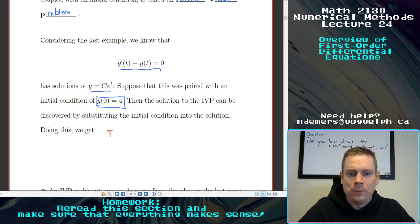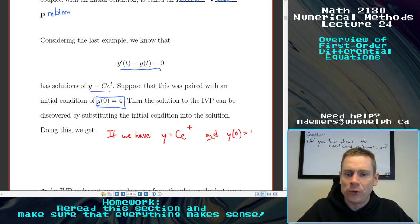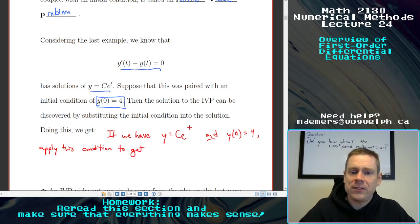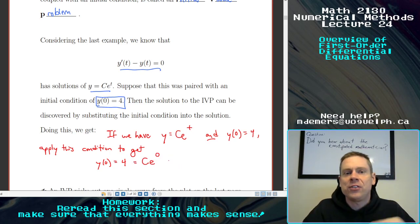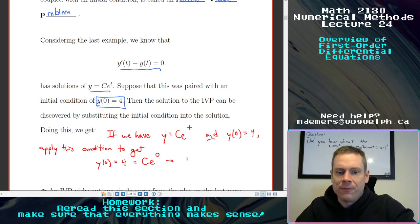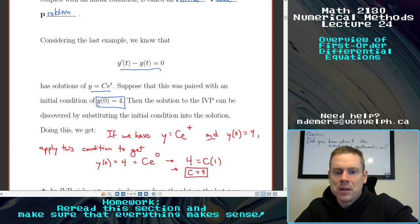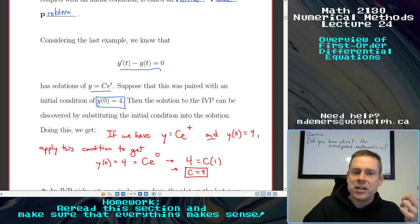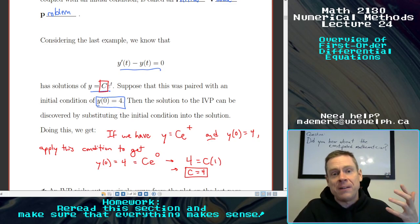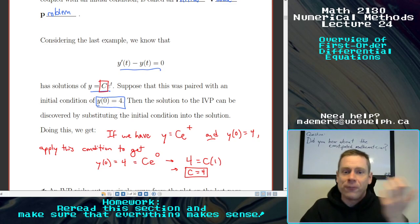If we have y equals c e to the t, and y of 0 equals 4, apply this condition to get, well look, this is a function of t, right? So I can plug in this initial condition, and I get y of 0, which is supposed to be 4, is equal to c e to the 0. Well, e to the 0 is just 1. So I get 4 equals c times 1, or c equals 4. And see, by applying this initial condition, I figure out exactly what value of c this is, and now I don't have an infinite number of solutions. I have a single solution of y equals 4 e to the t. So I'm going to write that down. We get a single solution. And that solution is y equals 4 e to the t.